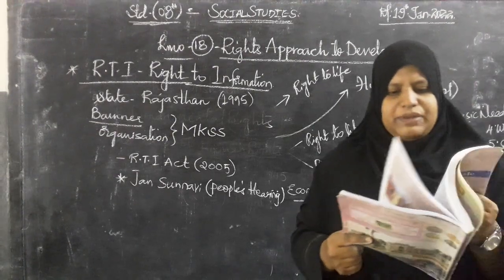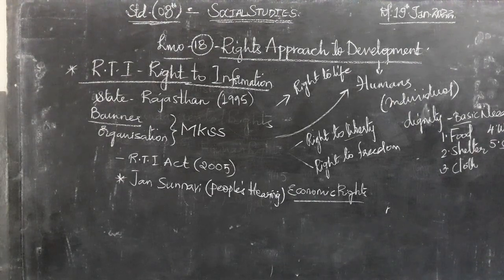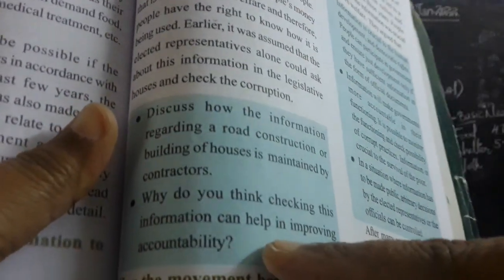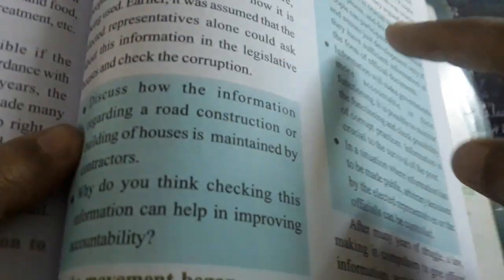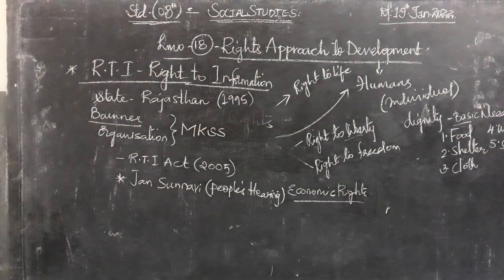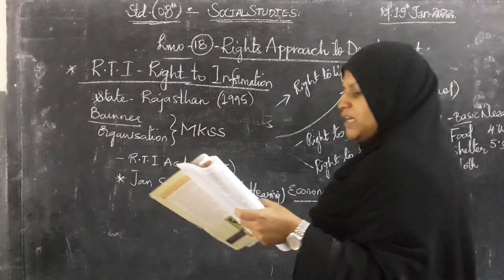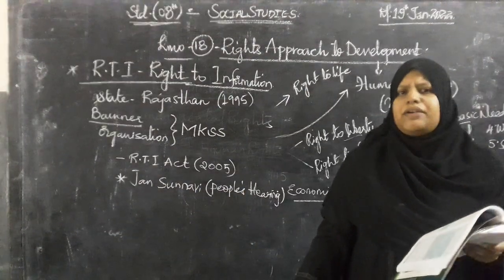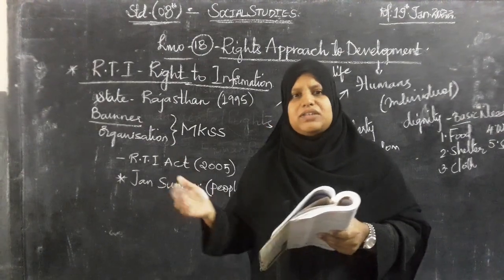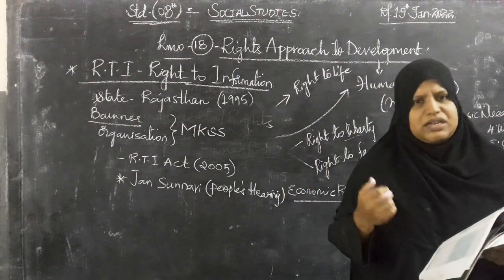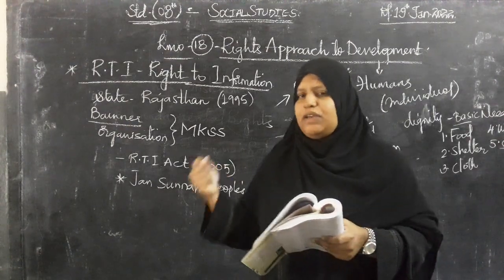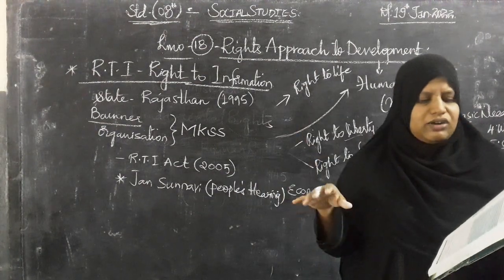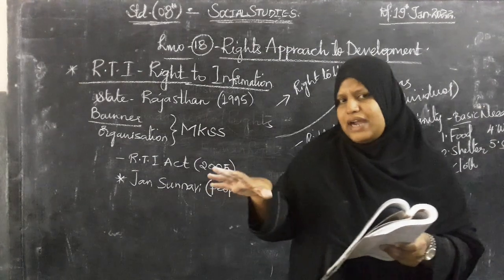Before this, it leads to the right to development. From page 205, there are inbox questions, and on page 207, there are two more questions about the RTI provision. First question: discuss how the information regarding road construction or building of houses is maintained by the contractor. In daily life, you will see contractors who have laid roads or done building constructions — how they maintain records, how much money they have been given out, what type of material, how much time it takes — all this information is being kept by the contractor.